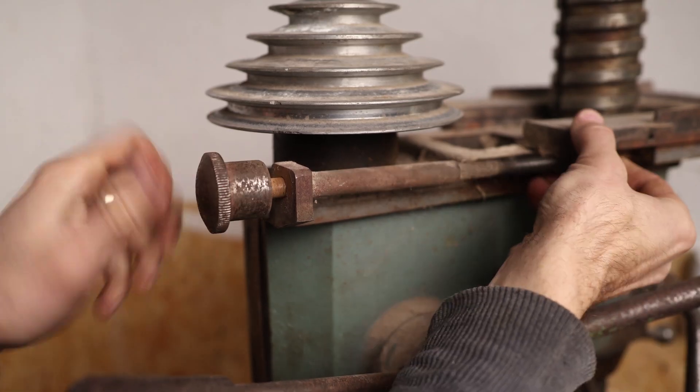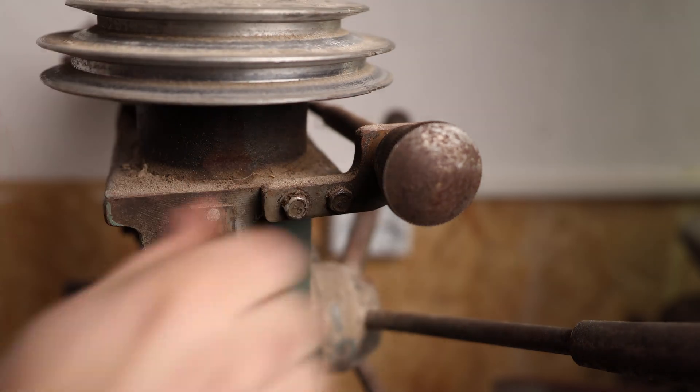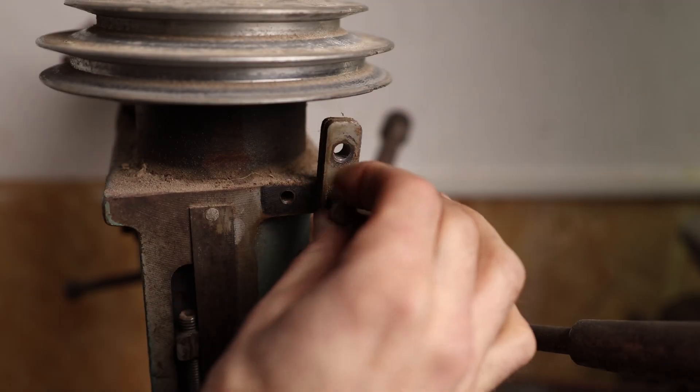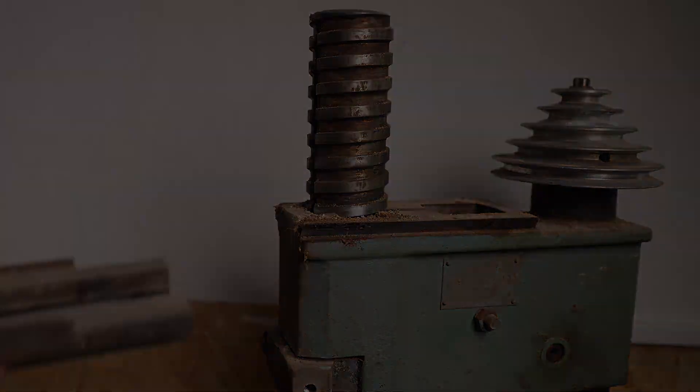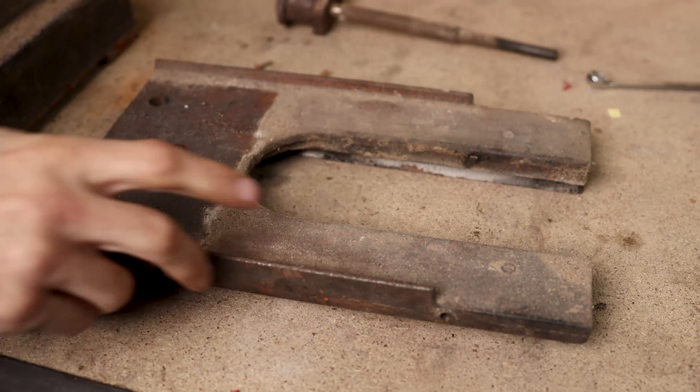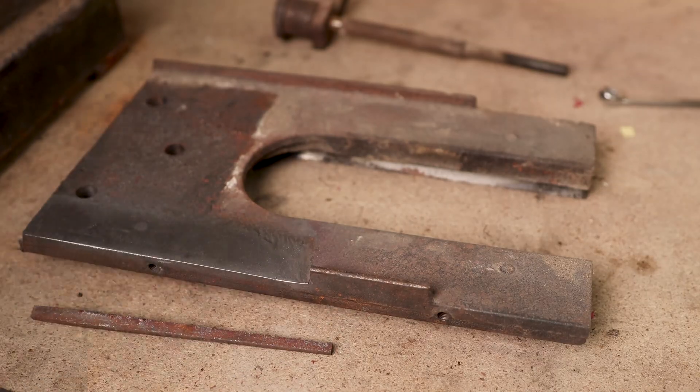Now I need to remove this belt tensioner. I need the side flat for motor bracket. That was easy.